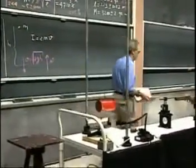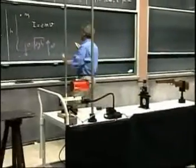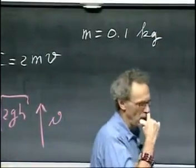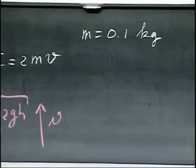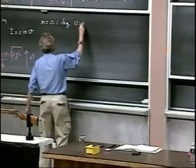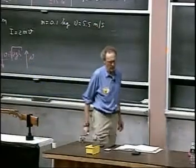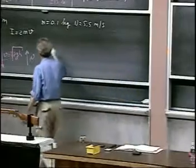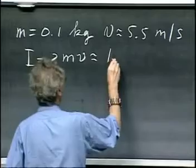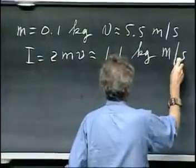We have here two balls that look alike. They have a mass of 0.1 kilogram, and I will drop them from a height of about one and a half meters, and that gives them a speed when they hit the floor of about five and a half meters per second. And so the momentum change is 2mv, so the impulse equals 2mv is about 1.1, and that would be kilograms meters per second.